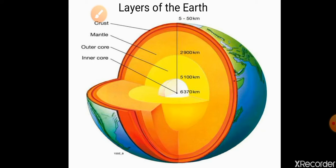Aaj hum padhenge earth ki layers ke baare mein. The earth has three main layers: crust, mantle, and core. The outermost layer is called crust, the innermost layer is called core, and the layer in between these two is mantle. These three layers are further divided into two parts: crust is divided into upper crust and lower crust, mantle is divided into upper mantle and lower mantle.